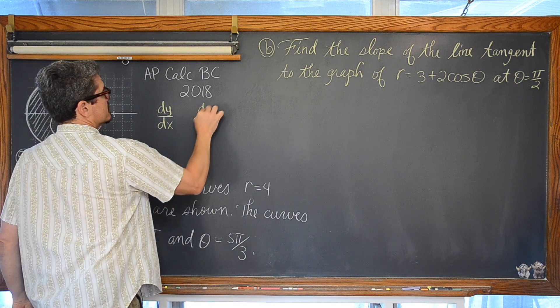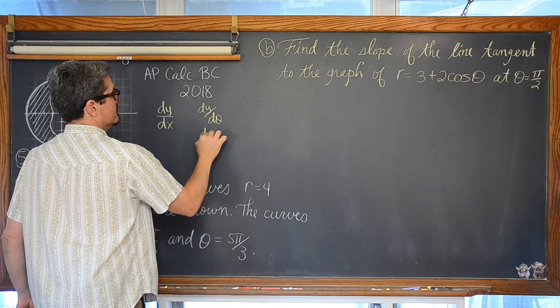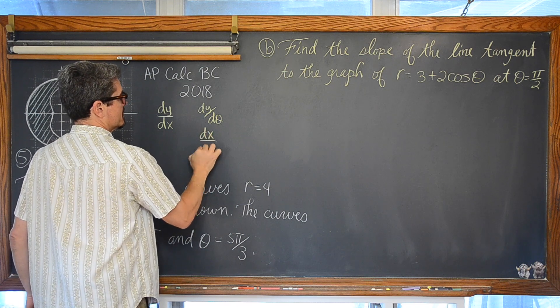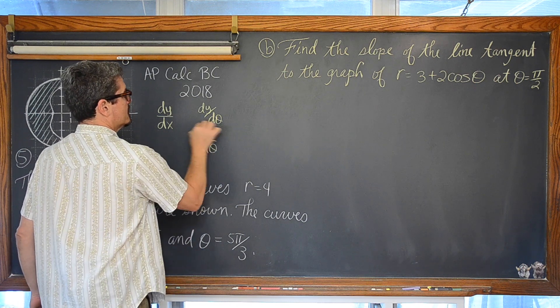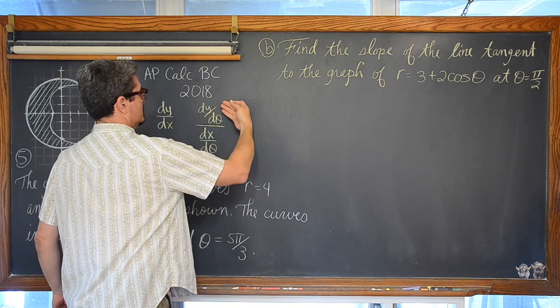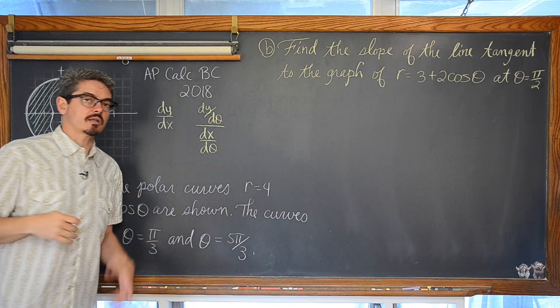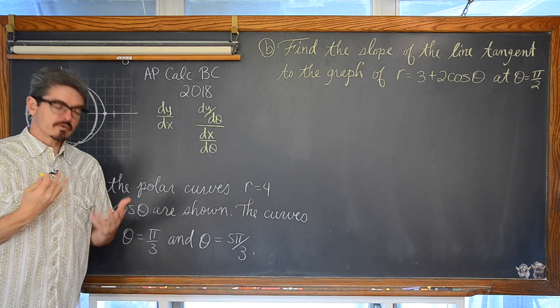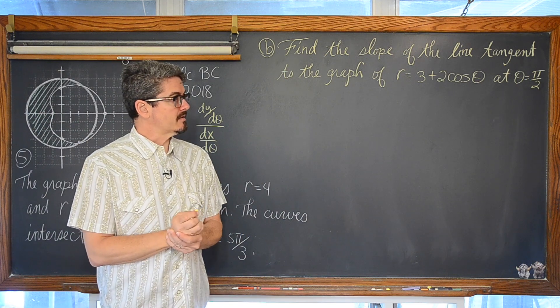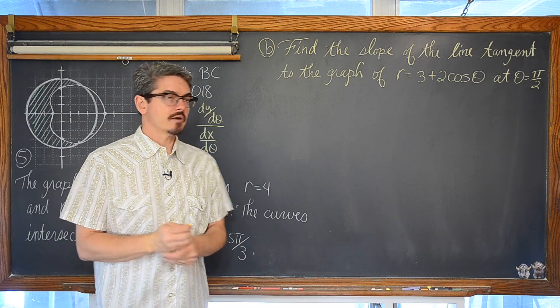What we need to do is take the derivative of y with respect to theta and the derivative of x with respect to theta, and then divide those. Basically, that is going to allow those d-thetas to cancel out, giving us the derivative expression we want so we can analyze it at theta equals pi over 2.